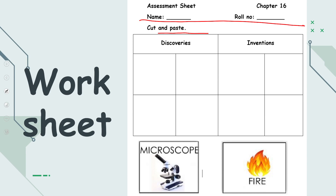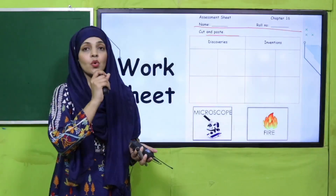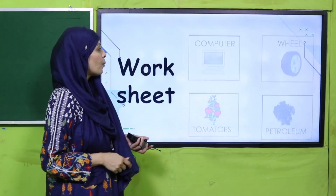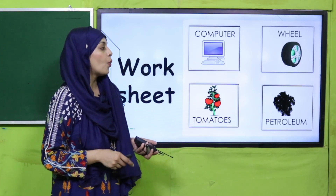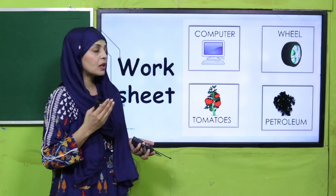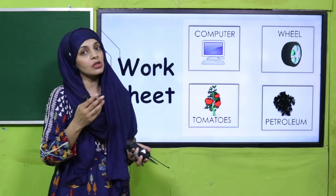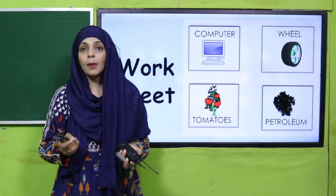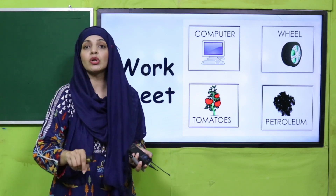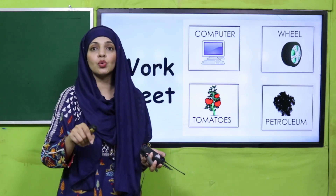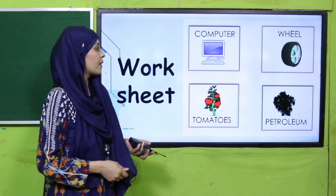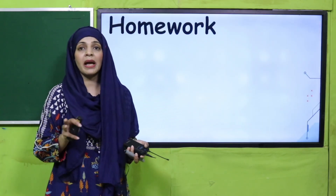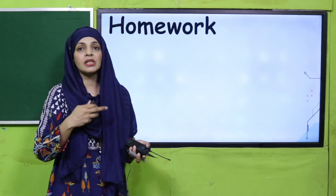Microscope and fire — which is a discovery and which is an invention? Cut the pictures and paste them in the right column. Then computer and wheel — both are inventions. Tomatoes and petroleum — both are discoveries, because they already existed in the world and were only discovered.